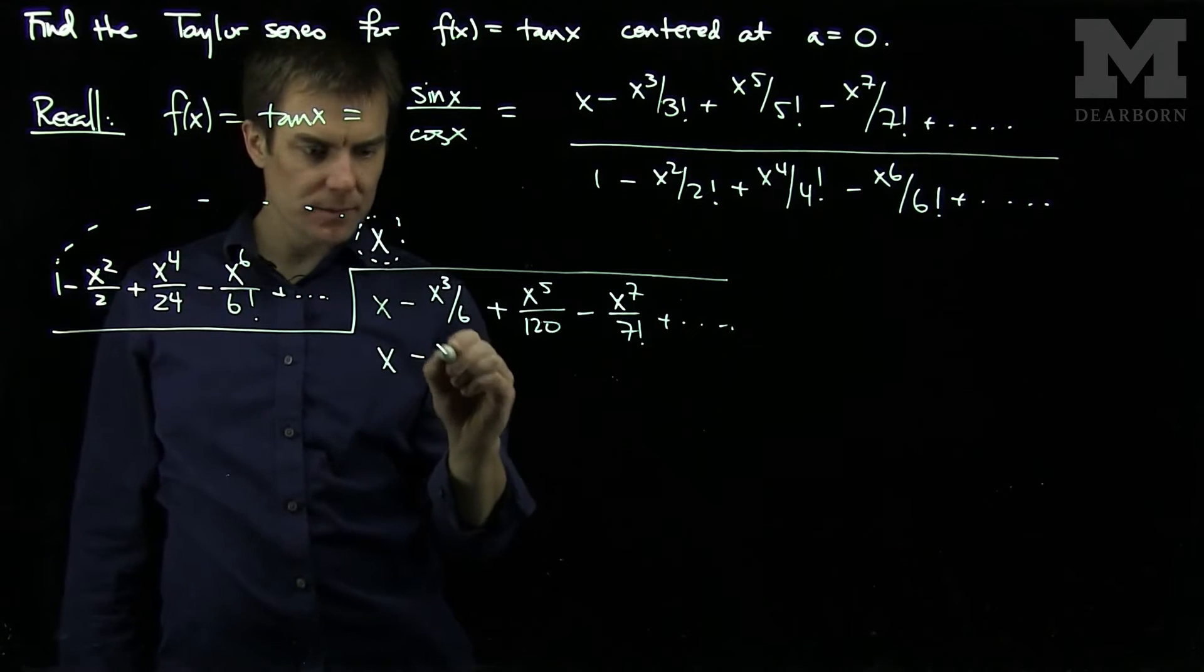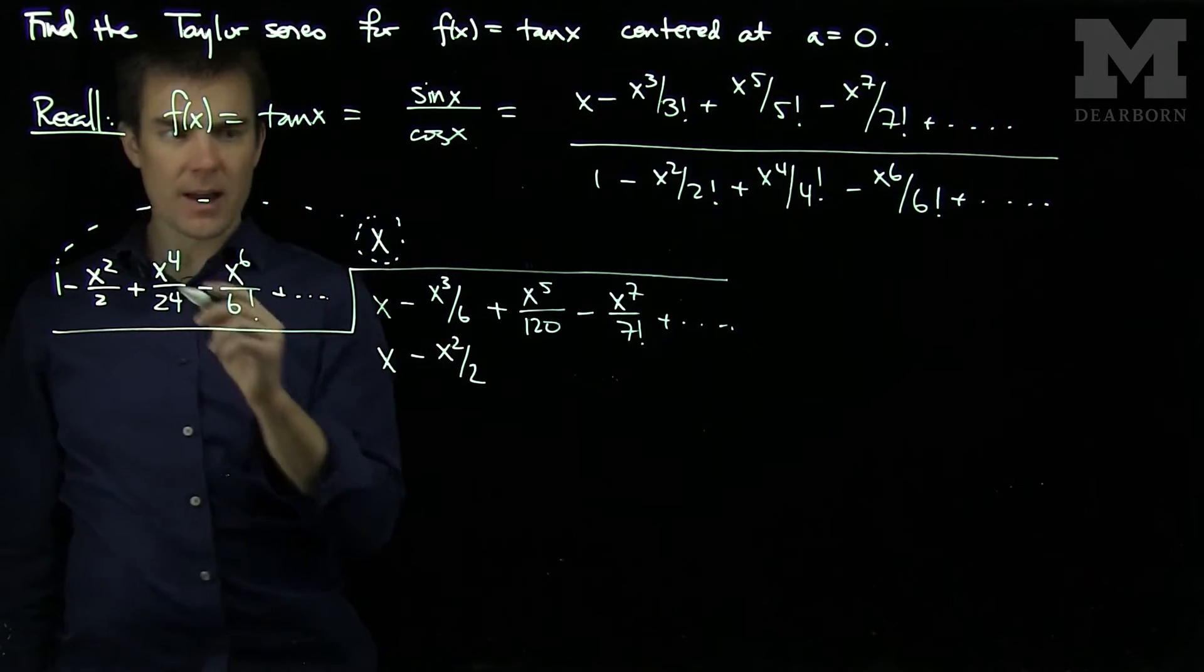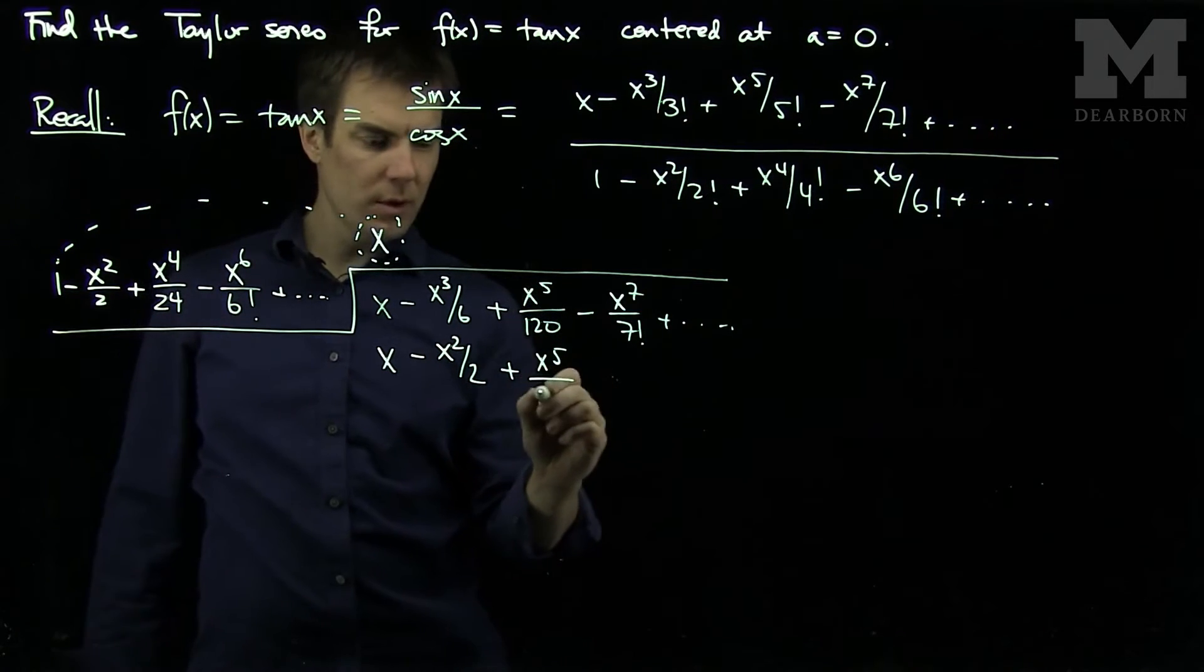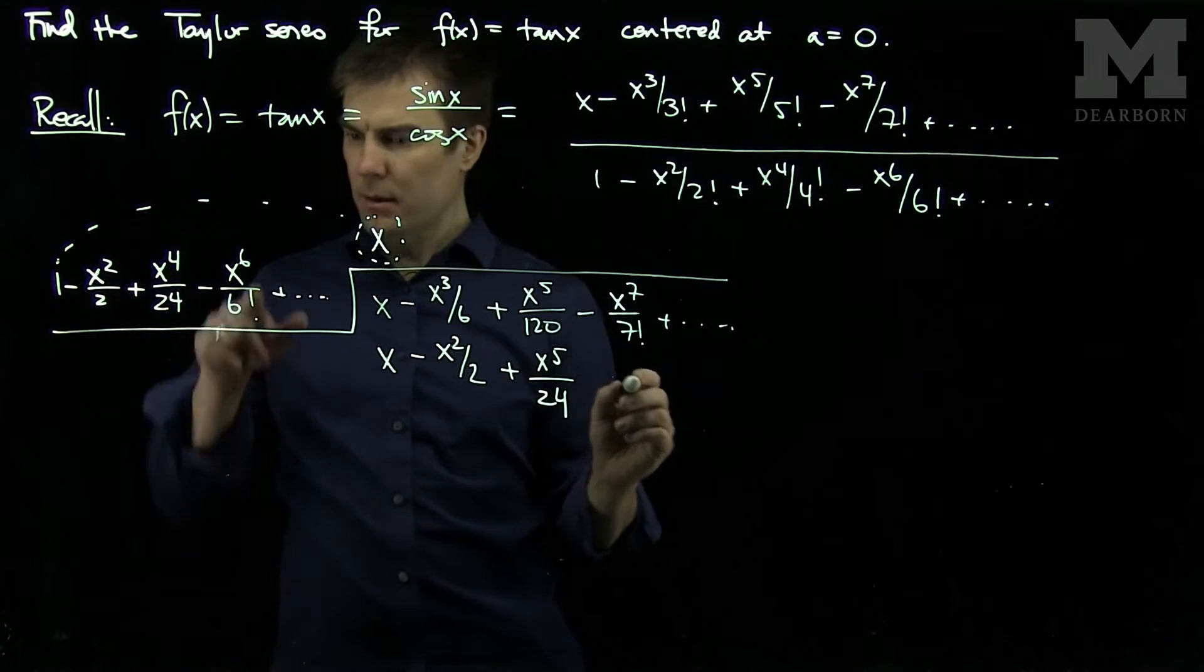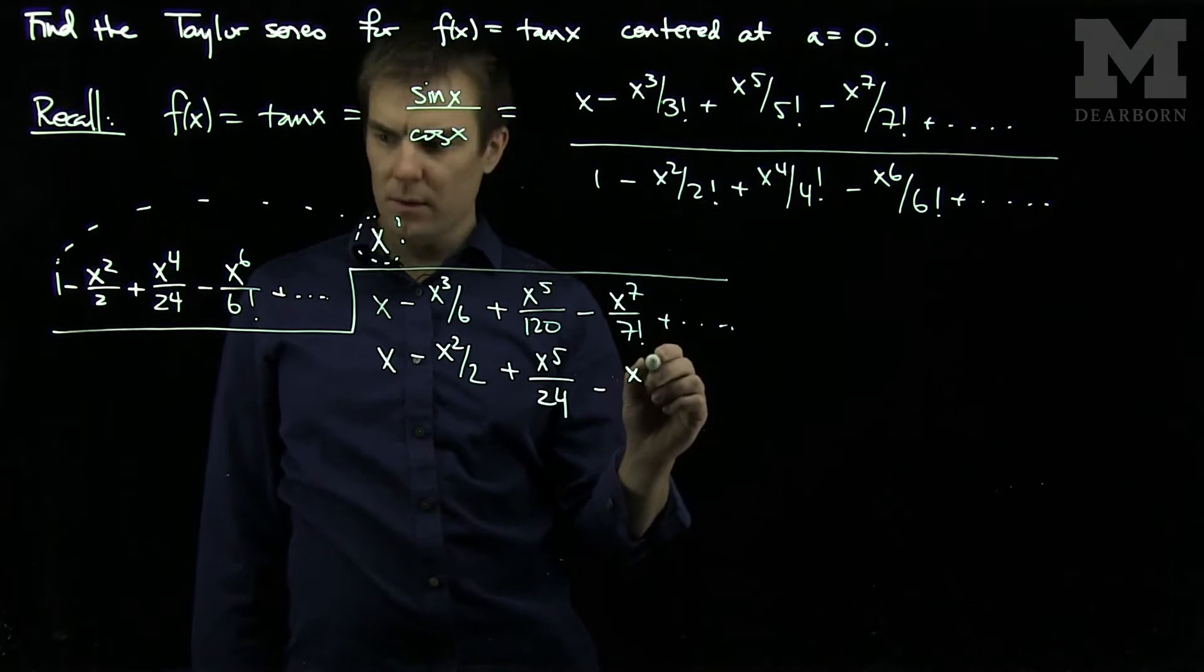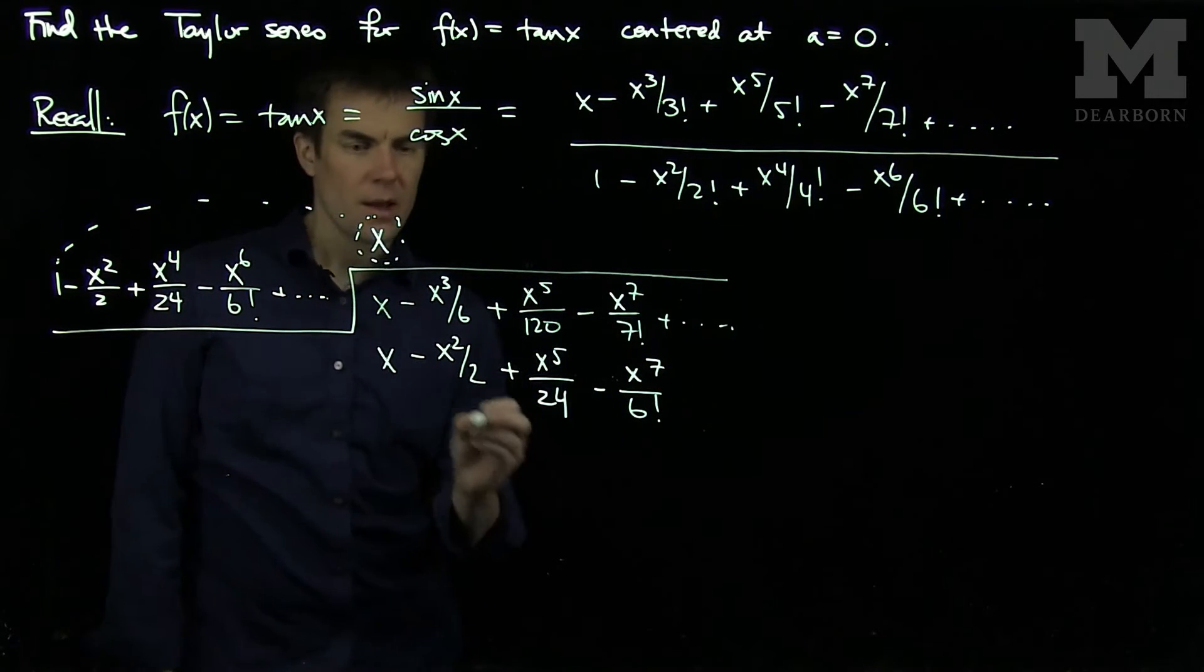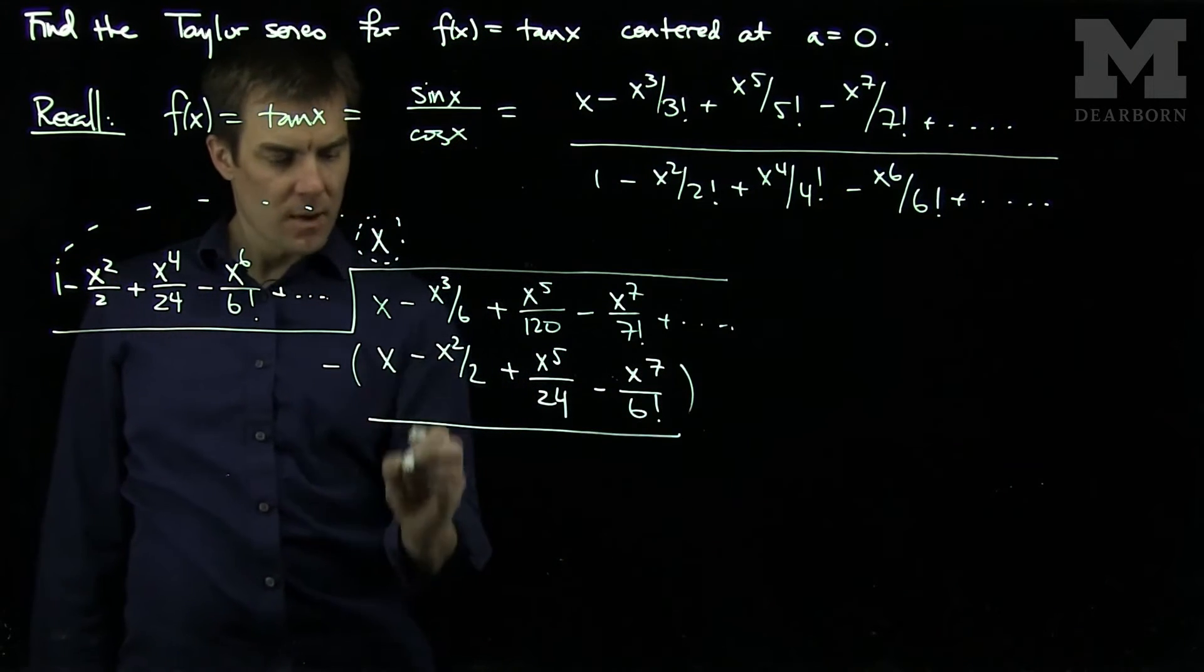Then I'm going to have minus x squared over 2, and then plus x to the fourth over 24, and then minus x to the sixth over 6 factorial. And then we subtract these things over here.